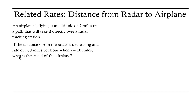Let's draw a sketch of this scenario to help us understand how to proceed. We have an airplane and a radar station. Here's the radar station with its radar disk, and the airplane is approaching it, flying in a direction towards the radar station. We know that the airplane is at an altitude of seven miles above the ground. The distance s from the radar — the distance of the plane from the radar — is decreasing at a rate of 500 miles per hour.